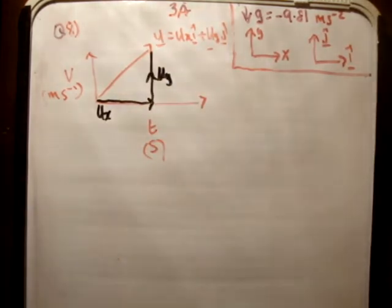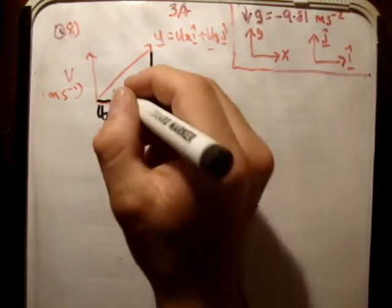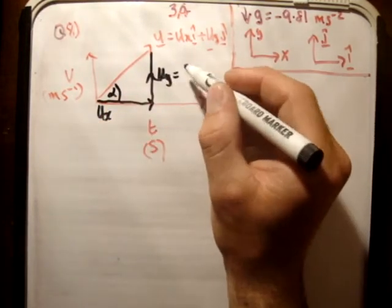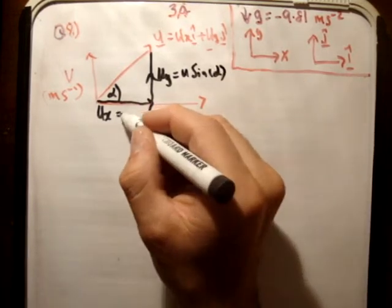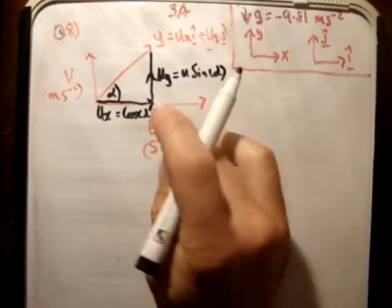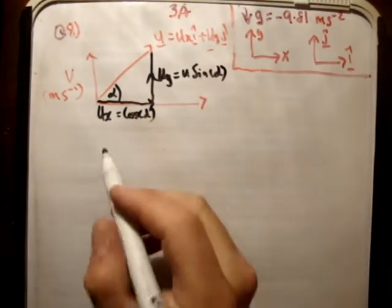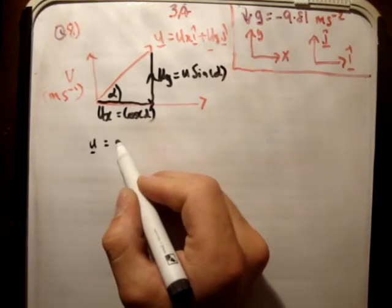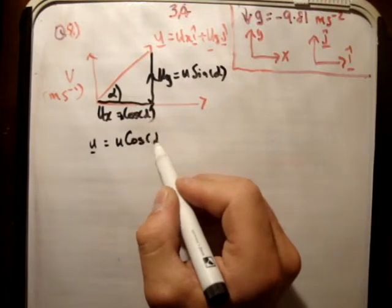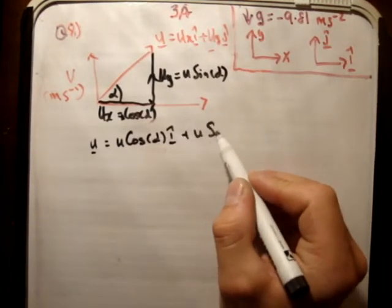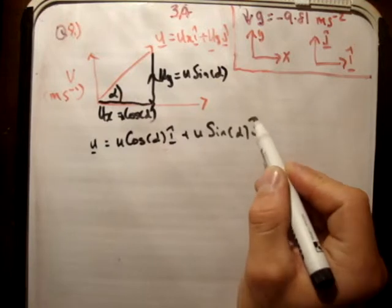If this angle here is equal to alpha, then u_y is equal to u sin alpha and this is equal to u cos alpha. Like so. So what we know is that u is equal to u cos alpha i hat plus u sin alpha j hat.